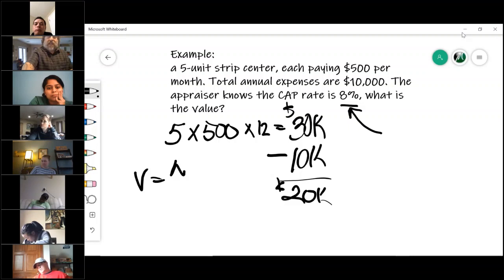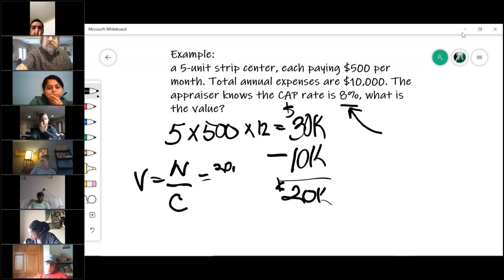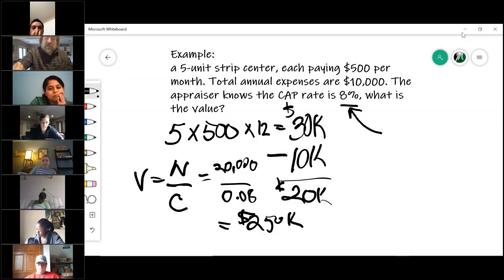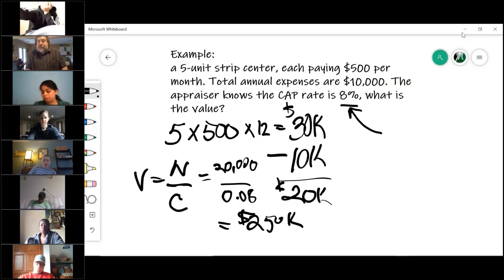Now, value is net divided by cap. So you take twenty thousand dollars, divide that by eight percent, which is 0.08, and that gives you, I guess I need to do the math, two hundred and fifty thousand. Is that right? That's what I got. I love algebra. So the value is equal to two hundred and fifty thousand. Exactly. That's how the appraiser, notice how that math is actually fairly simple. I can do algebra.